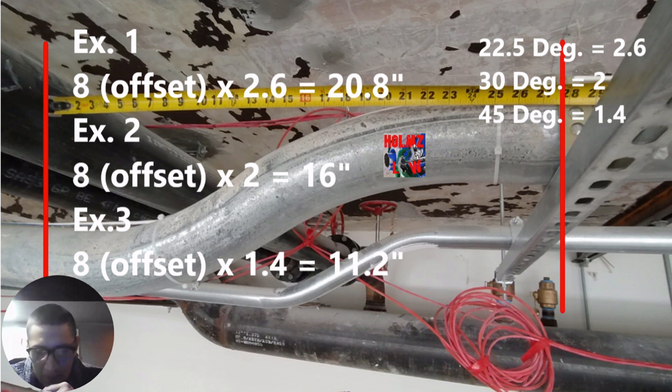For example one, we have an 8-inch offset, which for all the examples is the same. We're going to do a 22.5 degree bend, so the multiplier is going to be 2.6. That gives us a spacing in between bends of 20.8 inches, which is roughly 20 and 7/8. If we look at the actual bend, 20 and 7/8 in between our bends might be too much, it might not be.